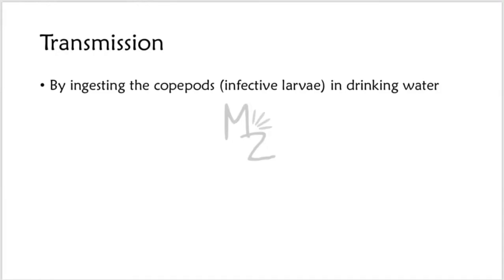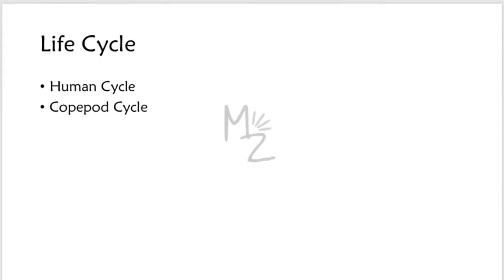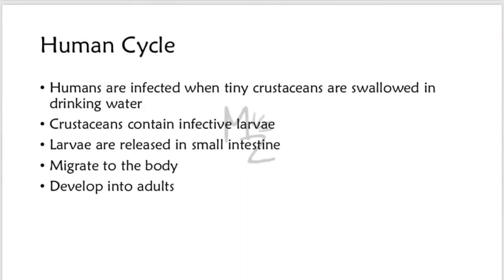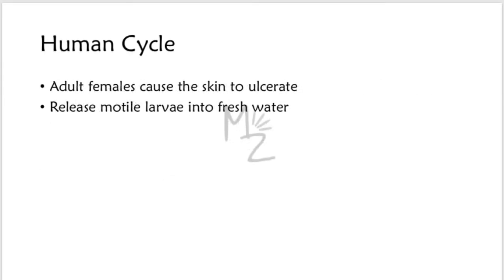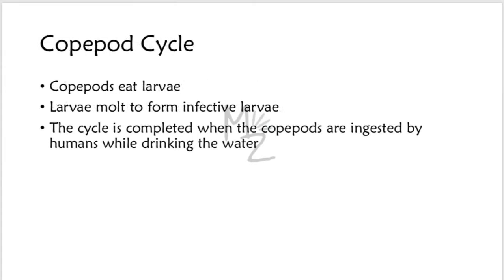The infective stage of larvae is the L3, the third stage. The life cycle of Dracunculus medinensis has two stages: the human cycle and the copepod cycle. In the human cycle, humans are infected when tiny crustaceans — copepods containing infective larvae — are swallowed in drinking water. The larvae are released in the small intestine and migrate into the body where they develop into adults. The adult females cause the skin to ulcerate and release larvae into fresh water.